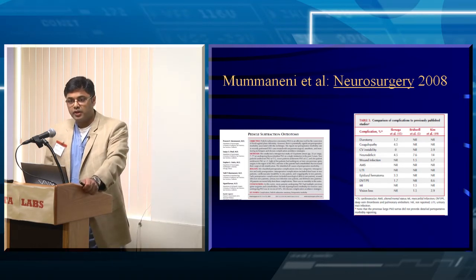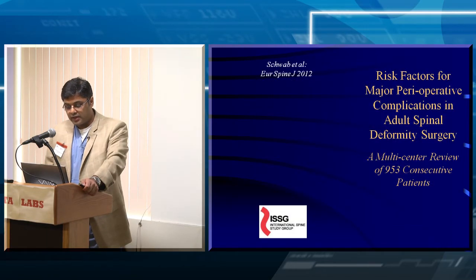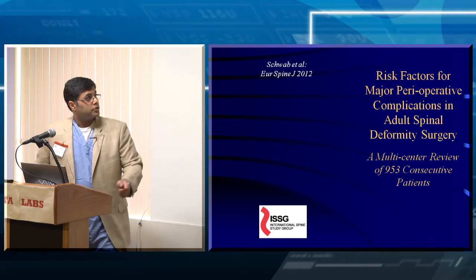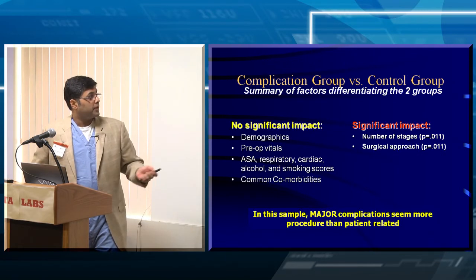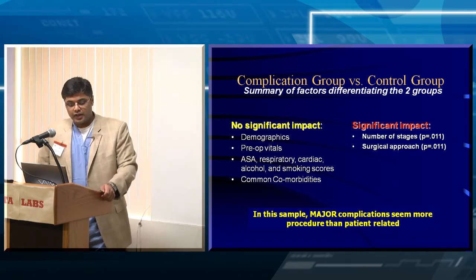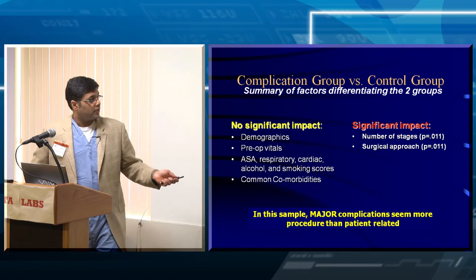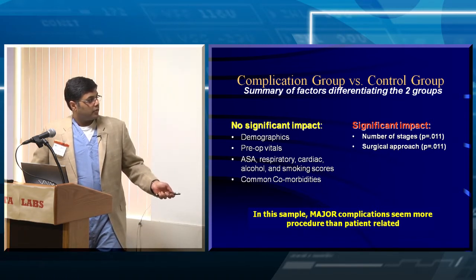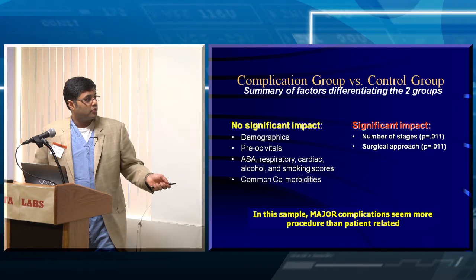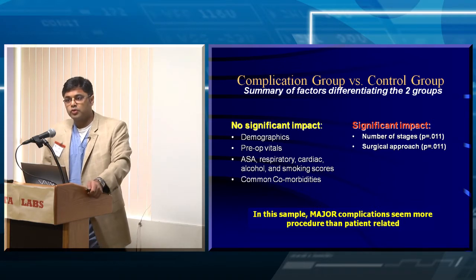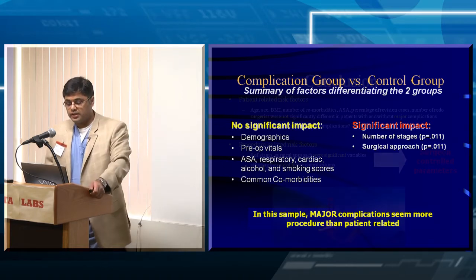There are a number of areas where we could potentially have an impact on complications. Schwab published in the European Spine Journal on risk factors for major perioperative complications. What was found NOT to have significant impact were patient demographics, vital signs, ASA score, cardiac disease, and common comorbidities. The major factors correlating with complications were the number of surgical stages and the type of surgical approach — these are surgeon-controlled parameters, not patient-reliant ones.